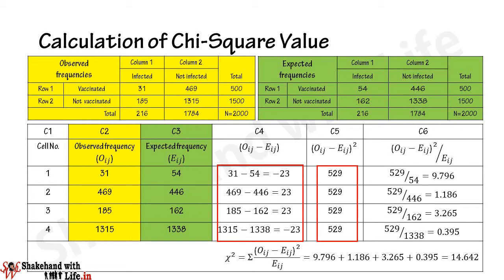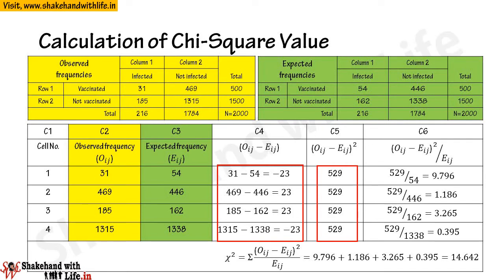In column 5, find the square of the differences between observed and expected frequencies. The square of minus 23 equals 529. Similarly, the square of 23 equals 529 for cell 2, 529 for cell 3, and 529 for cell 4.